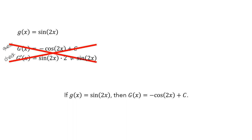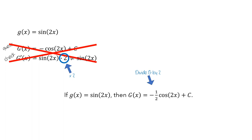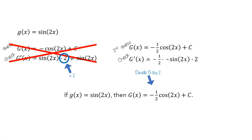But we weren't too far off — we were off by a multiple of 2, so maybe we just need to divide our guess by 2. Our second guess is that the antiderivative of g is negative one-half cosine of 2x plus c. Using the chain rule, we'd get negative one-half times negative sine of 2x times 2. Multiplying the two negatives gives a positive, and the 2s cancel, giving us sine of 2x, which matches our original g. So our second guess was correct.